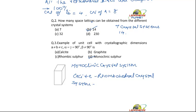And what are the dimensions over here? It is A is equal to B is equal to C, and alpha is equal to beta is equal to gamma, and that is not equal to 90 degrees.